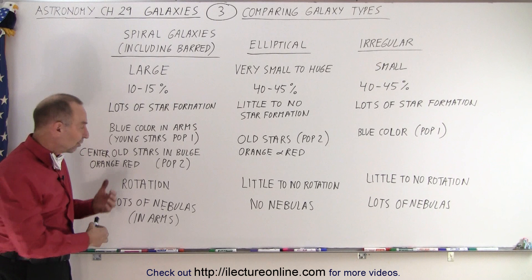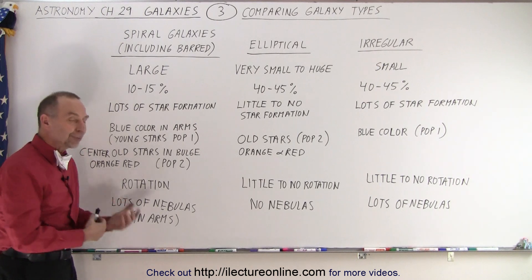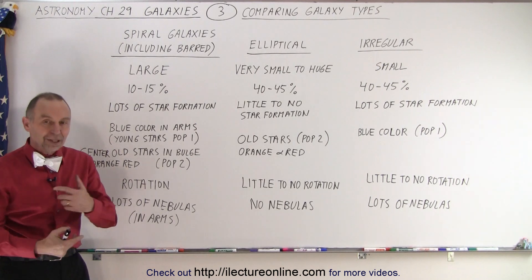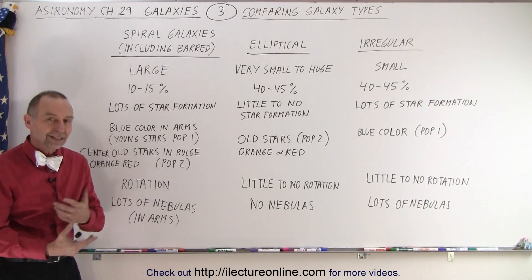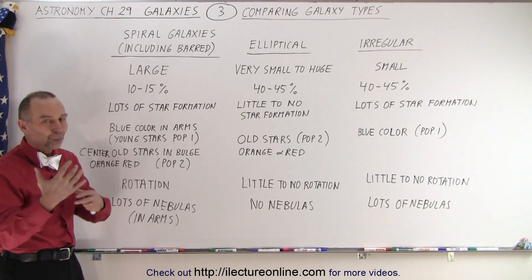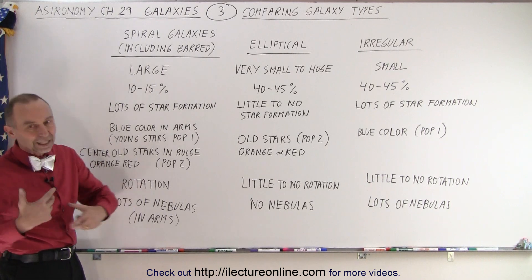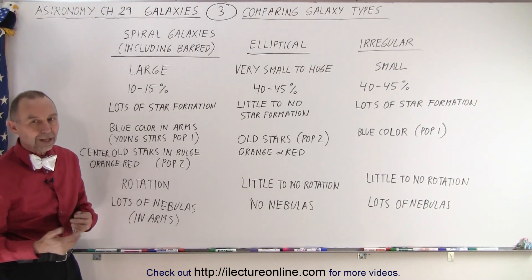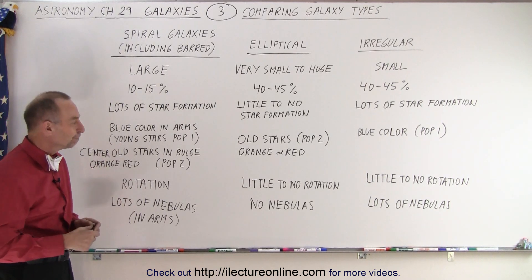Part of the reason why they look like spiral galaxies is because they rotate — it's kind of like a little whirlpool and everything gets swirled around with it.